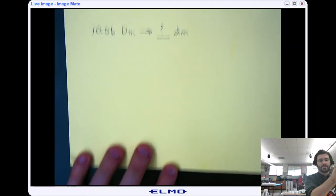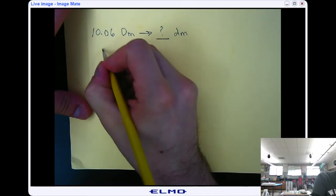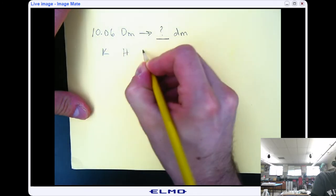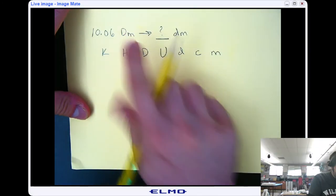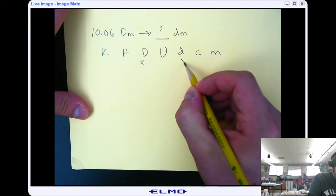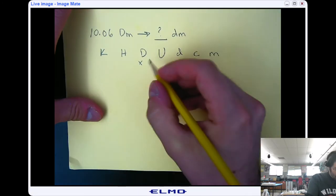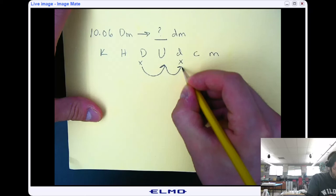We can reset and make our chart one more time. So we have kilo, hecto, deca, base unit, deci, centi, milli. In this case, we're going to start at deca, and we're going to go to deci, and we're going to go one, two steps to the right.